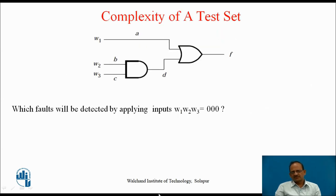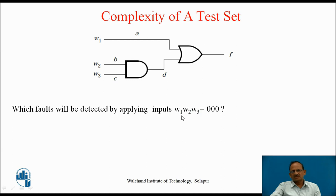Now consider the circuit shown in the figure. It has three inputs w1, w2, w3, four internal wires a, b, c, d, and a fifth output wire f. Think about which faults will be detected by applying inputs w1, w2, w3 equal to 0, 0, 0. Pause the video for a minute and write down your answer.